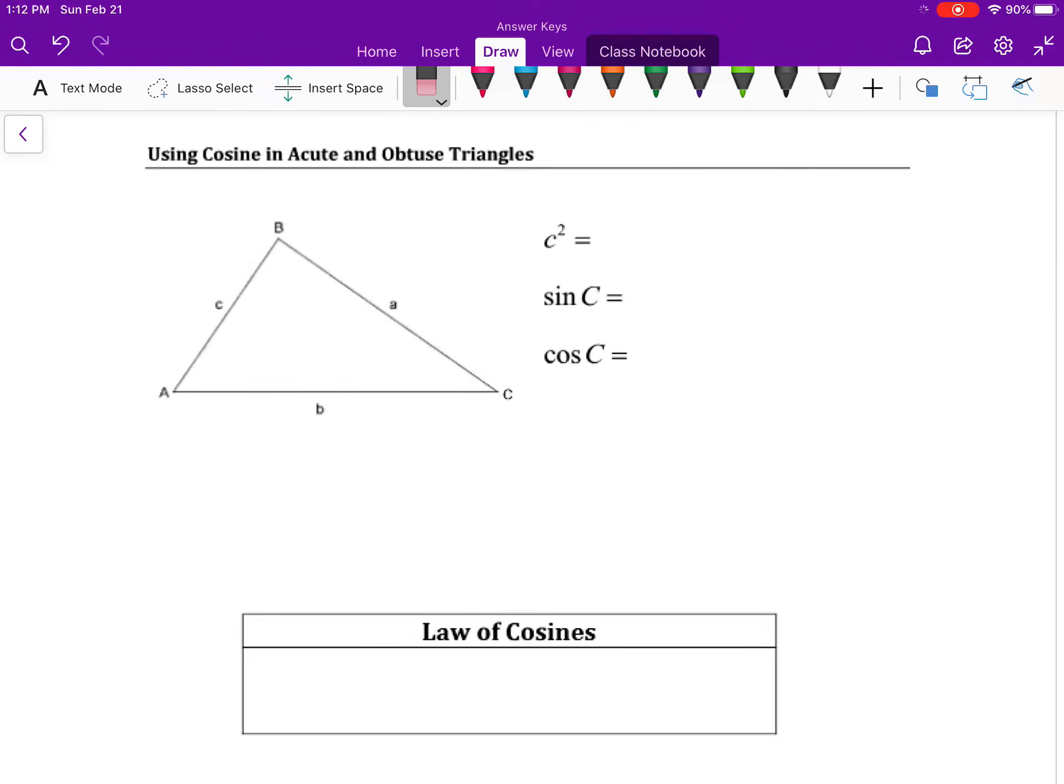We're going to try and do the same thing with triangle A, B, and C that we did with sine, but this time we're going to use cosine and see if we can use it to talk meaningfully about the six variables we have here: the three angles and the three sides across from those angles.